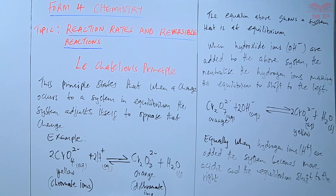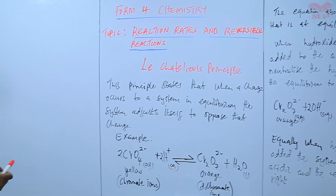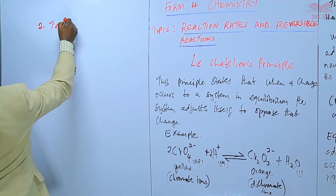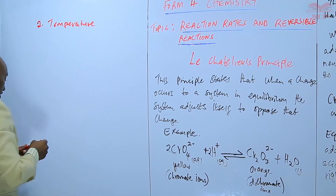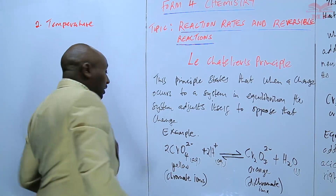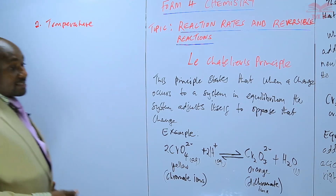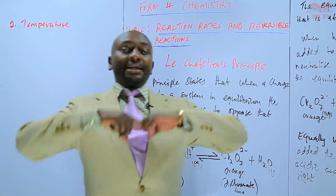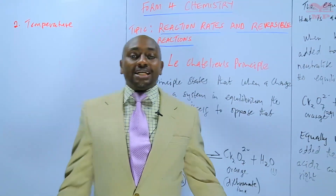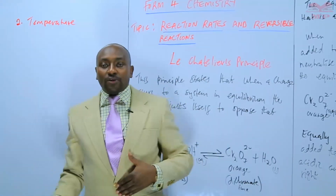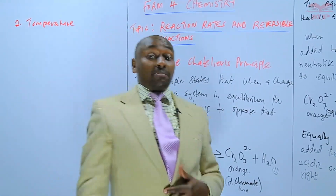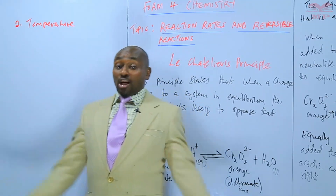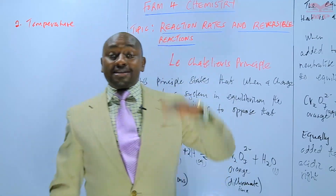Factor number two that affects the position of equilibrium is temperature. Temperature also affects the equilibrium. We have some reactions that are exothermic — the reactions that release heat — and we have other reactions that are endothermic, the ones that absorb heat. If a reaction is exothermic, it requires a lower temperature. If a reaction is endothermic, that is absorbing heat, it requires a higher temperature.